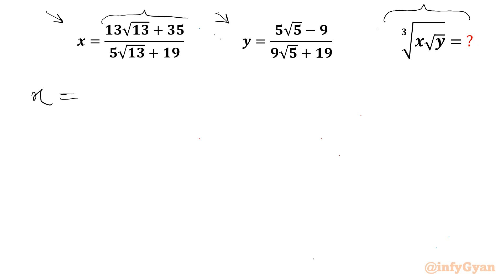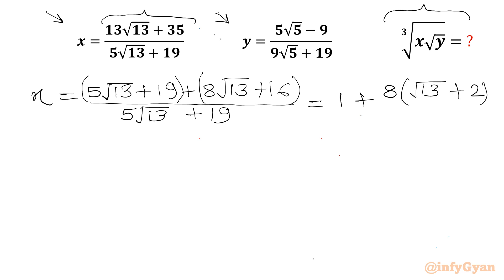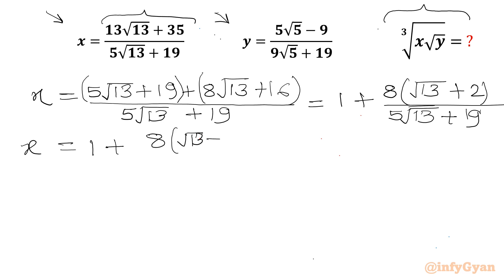I will split the numerator with respect to the denominator. So I can write 5√13 plus 19, then what is left is 8√13 plus 16 divided by 5√13 plus 19. Now let us split our numerator. So I can write equal to 1 plus, where 8 is common: 8(√13 + 2) over (5√13 + 19). So finally x is equal to 1 plus 8(√13 + 2) over (5√13 + 19).